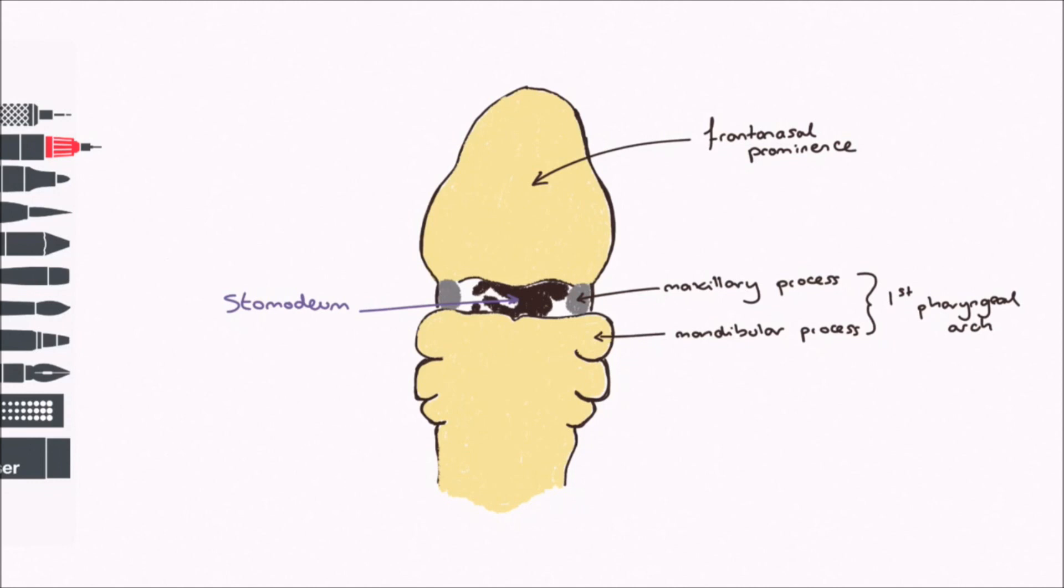The five processes arise around the stomodeum, which is the opening of the gut tube at the cranial end. The frontonasal prominence arises from neural crest mesenchyme between the forebrain and ectoderm. The maxillary and mandibular processes both derive from the first pharyngeal arch, which is supplied by the trigeminal nerve. This explains why facial sensory innervation is derived from the trigeminal nerve.